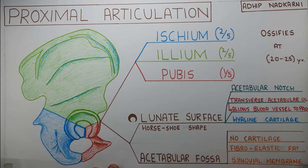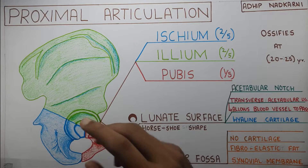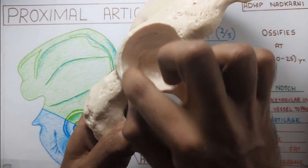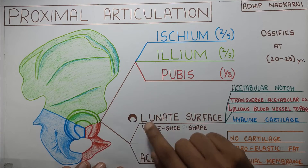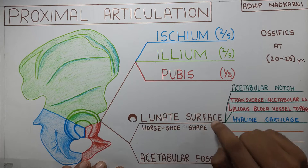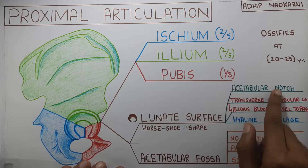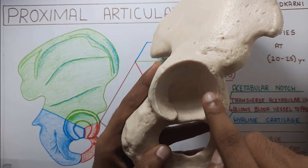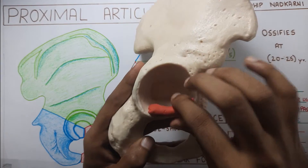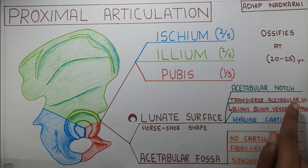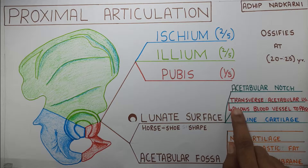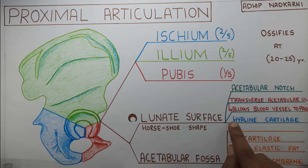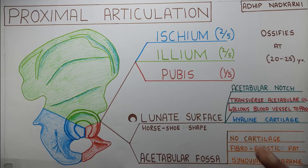The acetabulum can be divided into your lunate surface, which is on the outside, and your acetabular fossa. The lunate surface is said to have a horseshoe shape. The lunate surface has an acetabular notch, and there is a transverse ligament present at the notch — written in red because it allows blood vessels to pass through it. The acetabular notch also has a lining of hyaline cartilage, which I always write in blue. Color coding really helps.